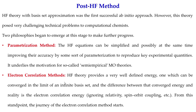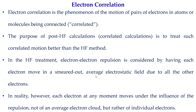Before discussing specific methods, we need to understand what electron correlation actually is. Electron correlation is the phenomenon of the motion of pairs of electrons in atoms or molecules being connected. There are many electrons in an atom and their motions will be correlated because they are repulsive to each other.